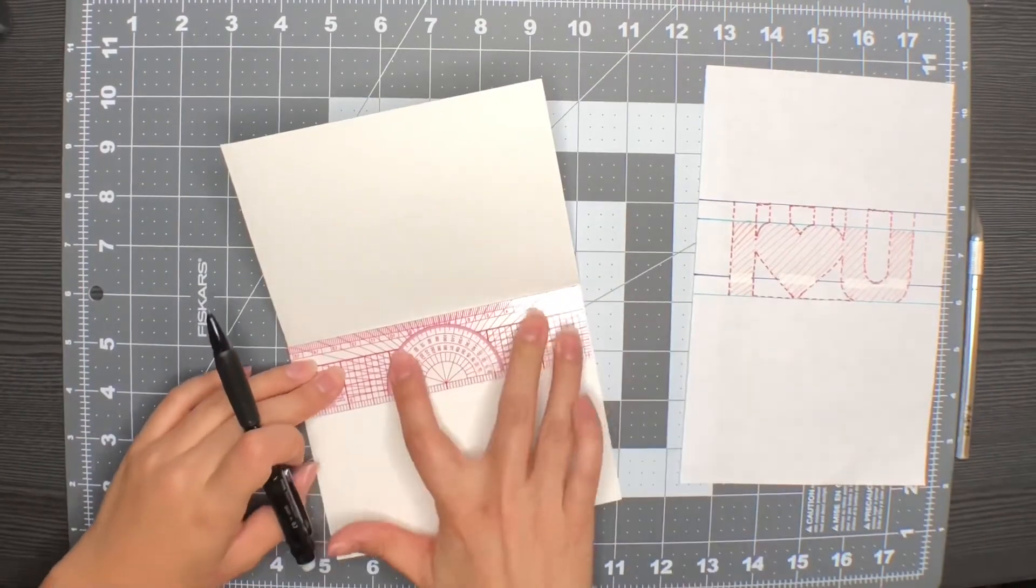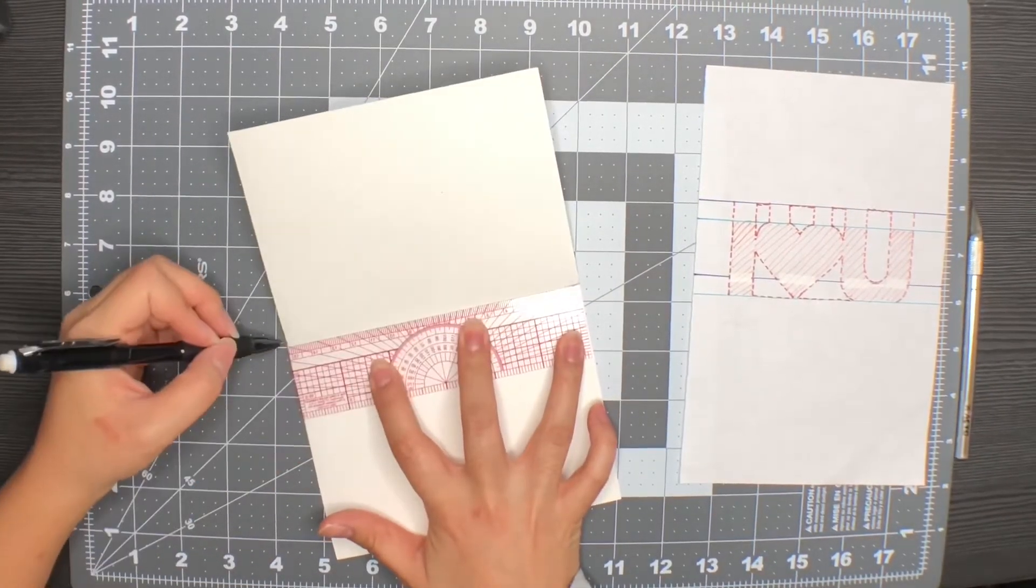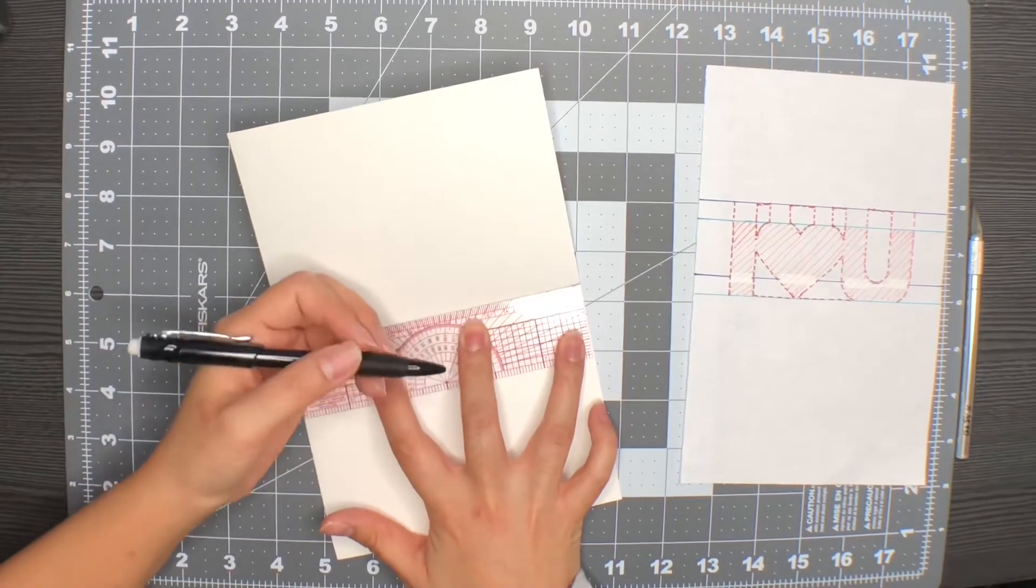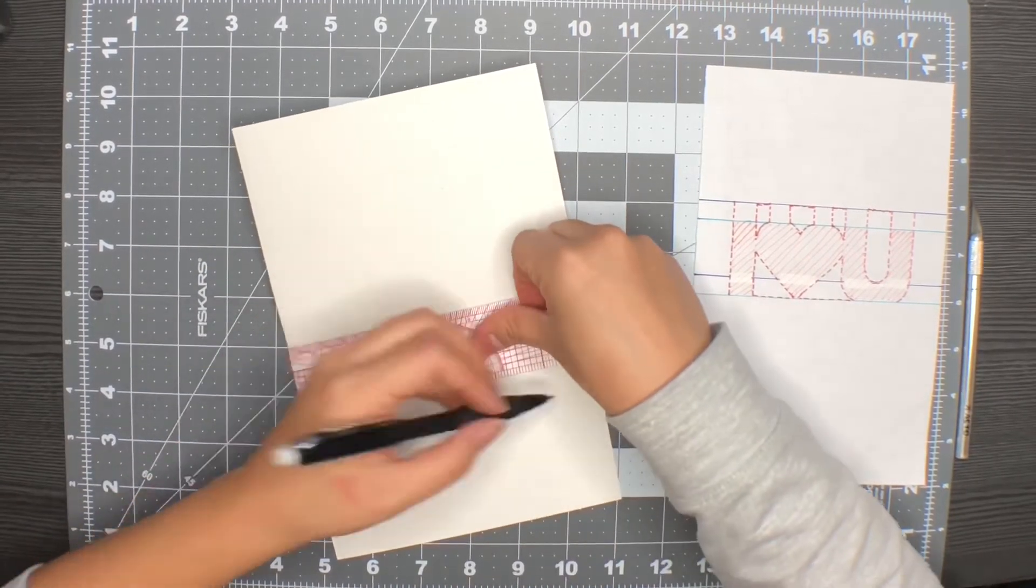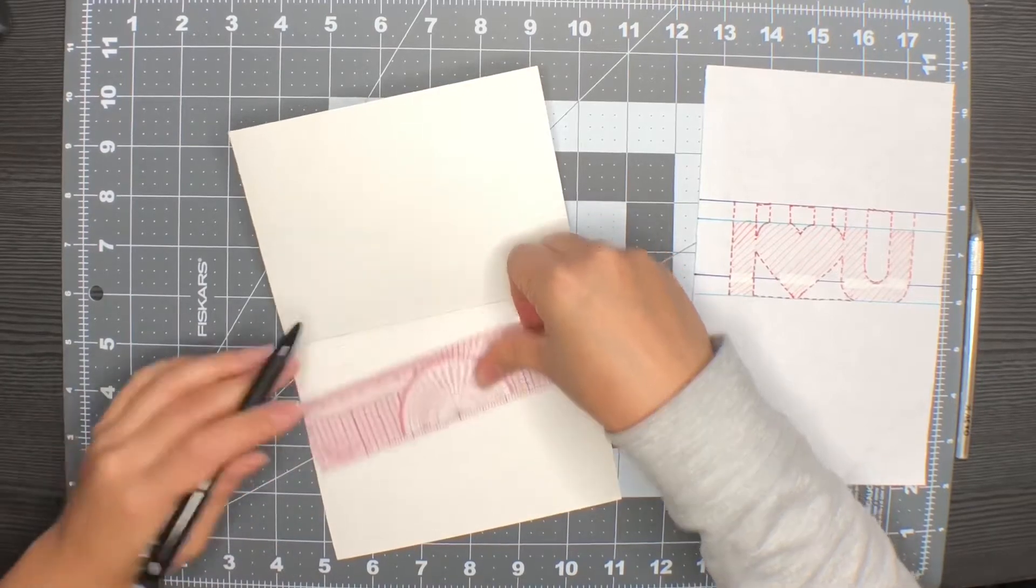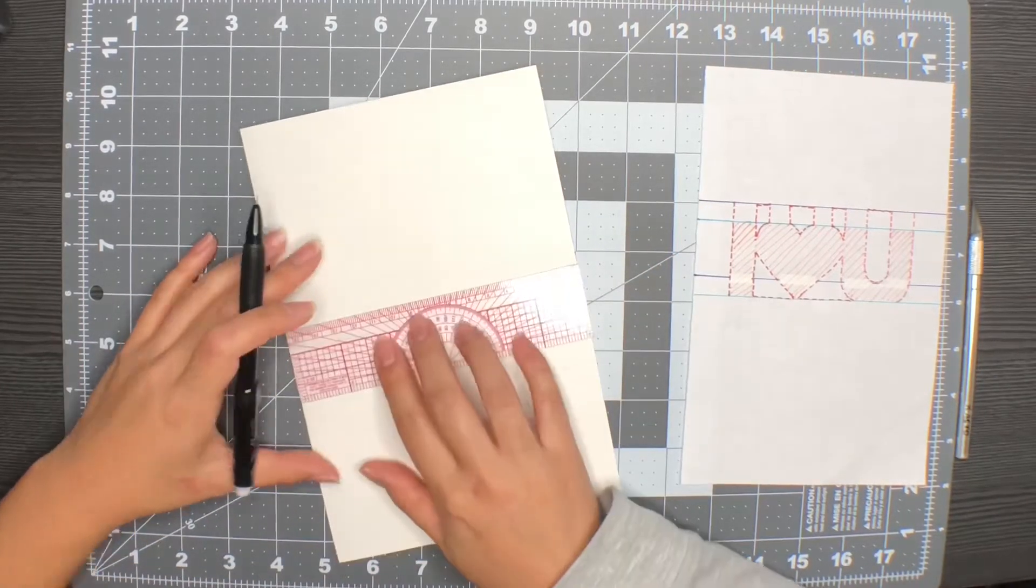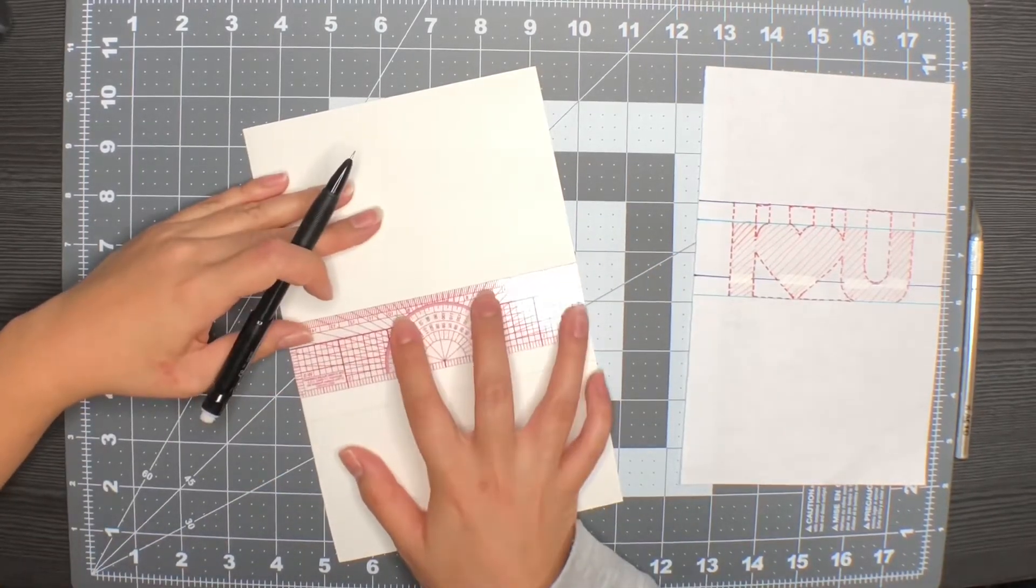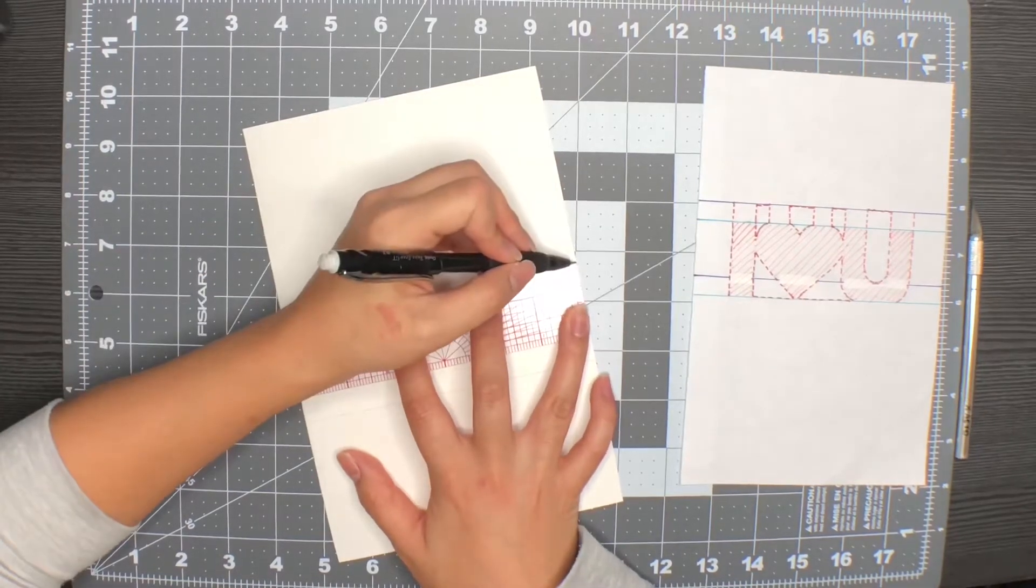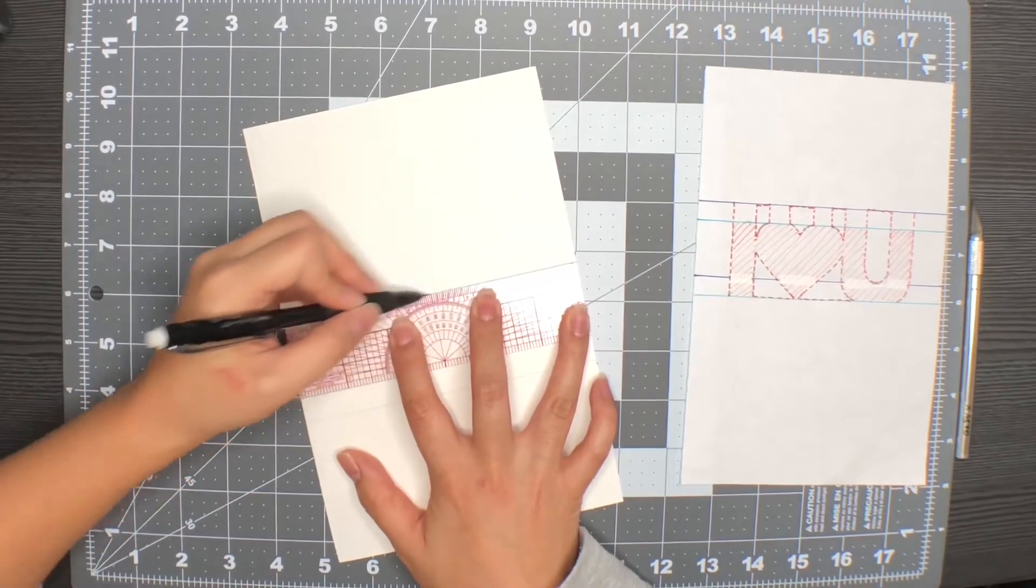Using a pencil, I'm going to mark where the fold of the card goes. Next, I will be making a line for the bottom of the letters. Next, I'll be marking the line for the top of the letters and this must be above the fold line.